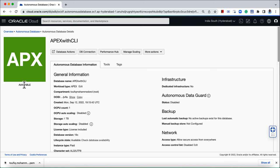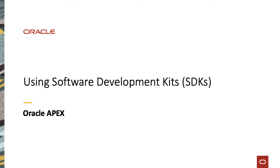That is how you provision Apex on Oracle Cloud using OCI CLI utility. Moving on to the next section. Apart from REST APIs and OCI CLI, using OCI SDKs is another way you can automate and script the creation of an Apex instance on Oracle Cloud. SDKs are available in various languages like Java, Python, TypeScript, JavaScript, .NET, Go, and Ruby.